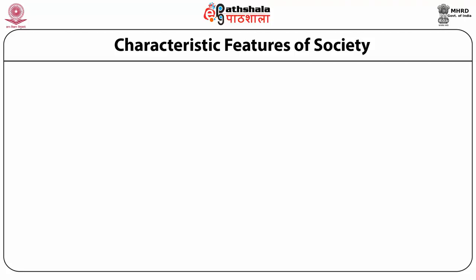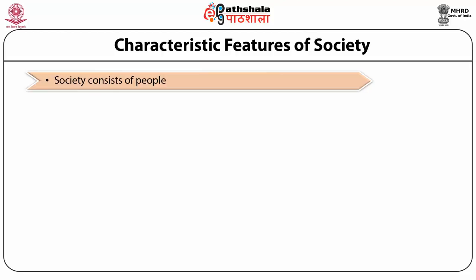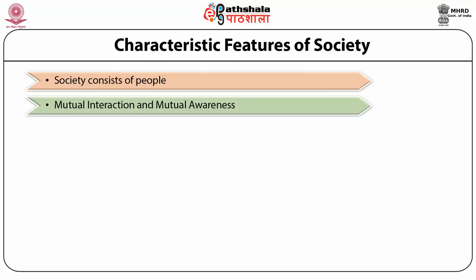Characteristics of society: The basic characteristics of society are as follows. Number 1: Society consists of people. Society is composed of people. Without students and teachers there can be no college and no university. Similarly, without people there can be no society, no social relationships and no social life at all. Number 2: Mutual interaction and mutual awareness. Society is a group of people in continuous interaction with each other. It refers to the reciprocal contact between two or more persons. It is a process whereby men interpenetrate with other members of the society. The limits of society are marked by the limits of social interactions.